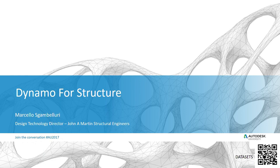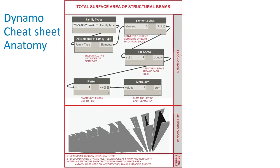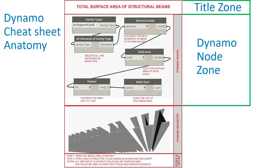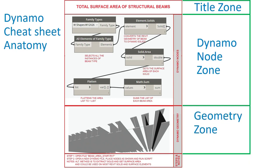So what you have there — I'm starting this new format where there are actually sheets here. Each sheet is a little small, but I'll be showing everything up on screen, so you won't really need these as we go along. I started this new format called the Dynamo Cheat Sheet. Here's the basic anatomy: each one is one contained page, one example, a few nodes, and away you go. You've got a title zone — basically what are you doing — a Dynamo node zone where the nodes are, little descriptions of what each one does, a geometry zone showing the resultant in either Dynamo or Revit or both, and then some notes and steps like 'open this file.' It's a self-contained one-page format.